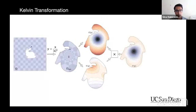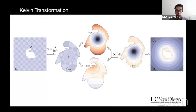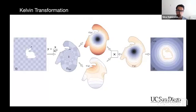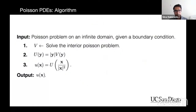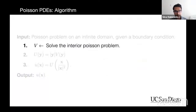We put the singularity-capturing function and the PDE solution back together via simple multiplication, then invert back. As long as an inversion scheme and singularity-capturing function can be established, we can transform any infinite PDE problem to a bounded one. We call this the Kelvin transform, generalizing beyond the Laplace problem Lord Kelvin mainly explored. Let's consider Poisson PDEs, which span many applications in computer graphics.